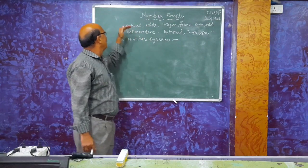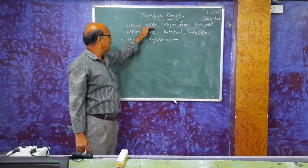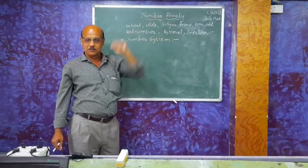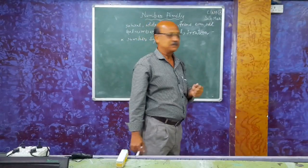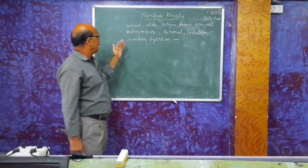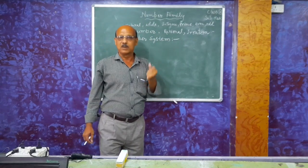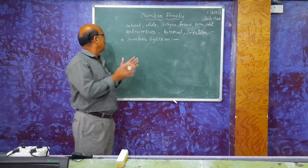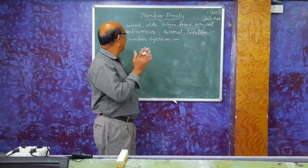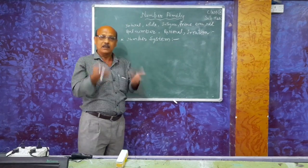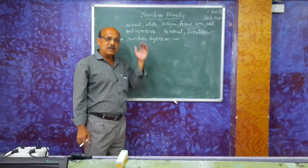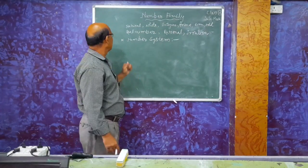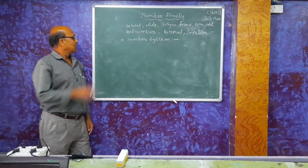Here, first of all, we have natural numbers, whole numbers, integers, prime numbers, rational numbers, and so on. We have so many types of numbers, and when we systematically study about these numbers, it is known as the number system.